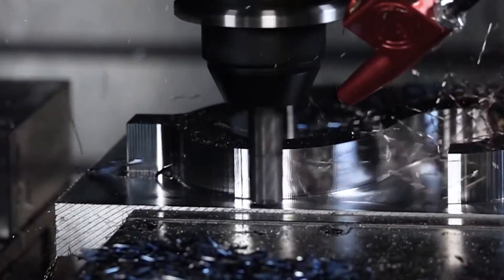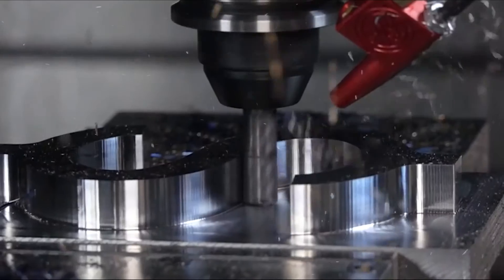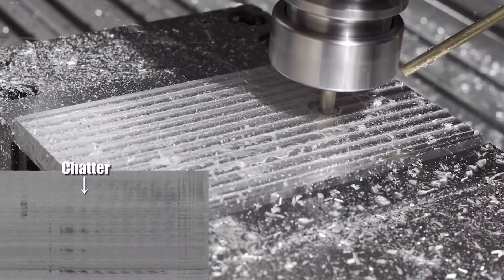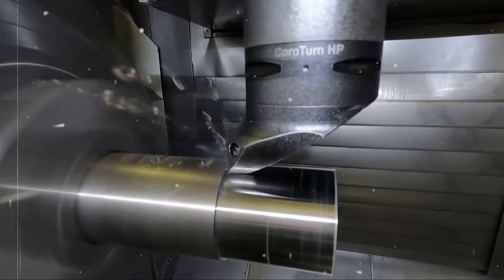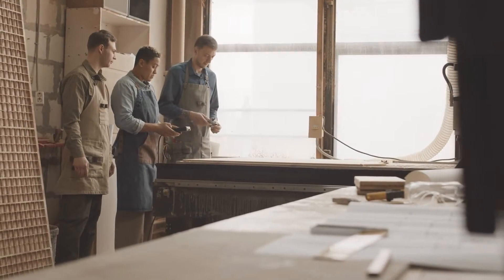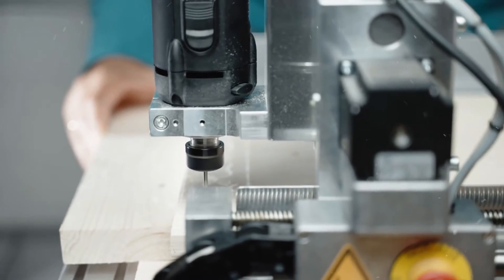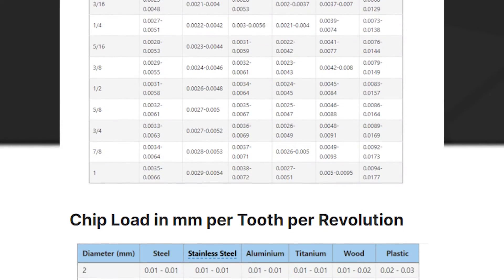Change only one variable at a time while keeping the other constant to accurately gauge the impact of your tweaks. For example, start conservative with a low-to-moderate feed rate and baseline RPM. Gradually increase feed in small steps while maintaining the same RPM until chatter arises, then slightly back off. Next, lower RPM in increments while holding feed steady to explore how surface finish improves at lower surface speeds.